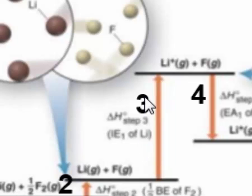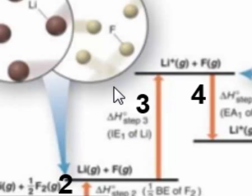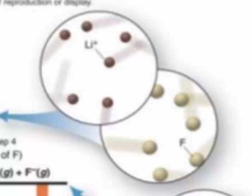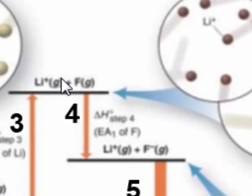In the next step, we basically remove an electron from each of the lithium atoms — essentially ionizing those metal atoms. That requires energy, so it's an uphill change to the state of the chemical system. Then in the next step, we basically transfer that electron, which was removed from the lithium atom, to the fluorine atom to produce the fluoride ion.